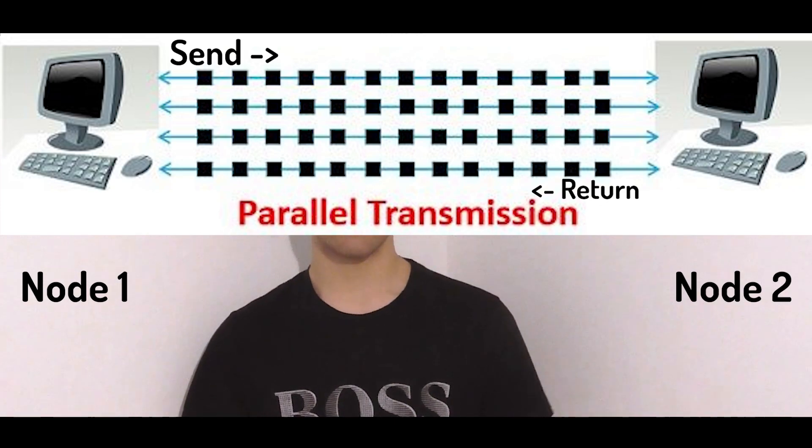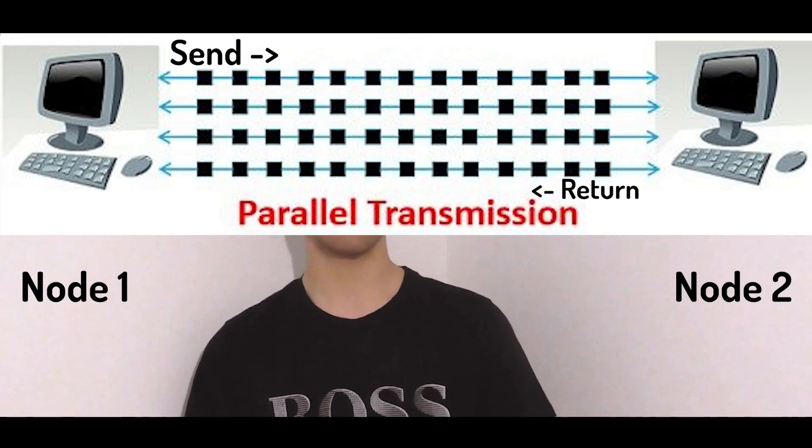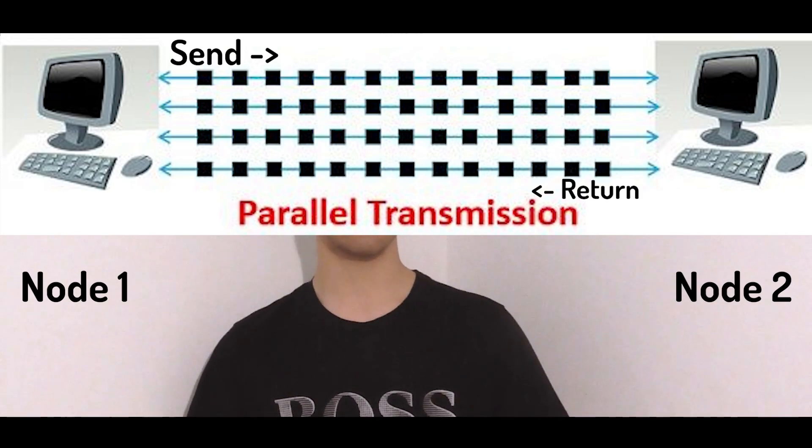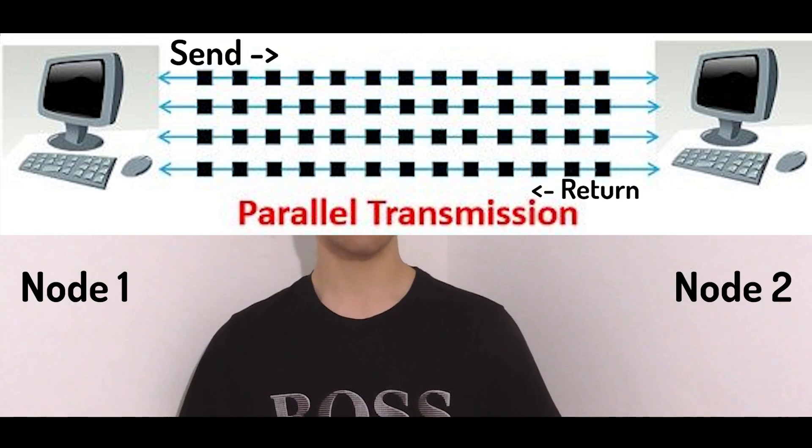Parallel data transmission, as the name suggests, involves transmitting multiple bits simultaneously over multiple communication channels. In this method each bit of data is sent over a separate wire or set of wires. Parallel transmission is commonly used in shorter distance communication and is known for higher transmission speed. The sender divides data into multiple chunks with each chunk containing several bits. These chunks are then transmitted simultaneously over different wires or channels. At the receiver's end the individual bits from each channel are combined to reconstruct the original data, and since multiple bits are transmitted simultaneously parallel transmission often allows for higher data transfer rates compared to serial transmission.